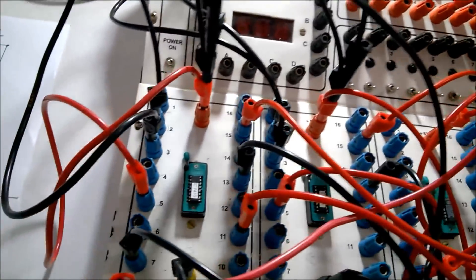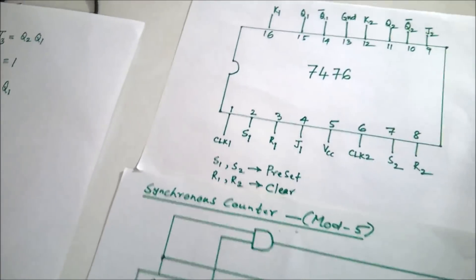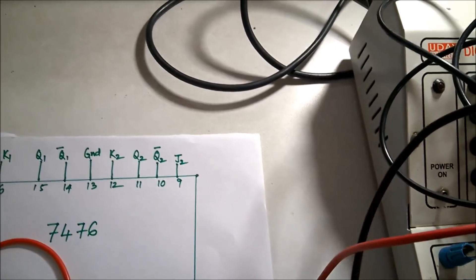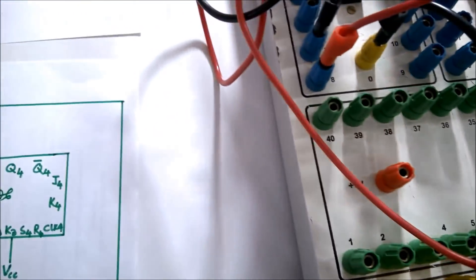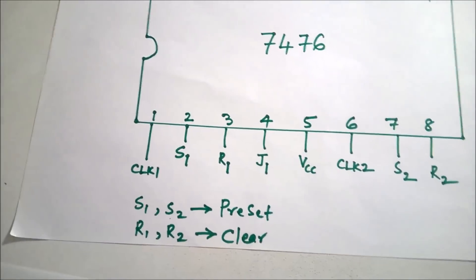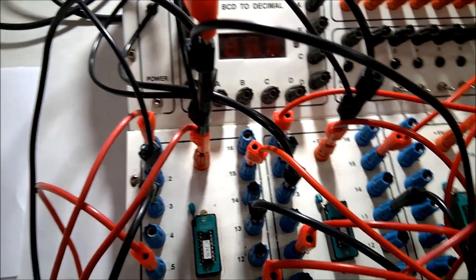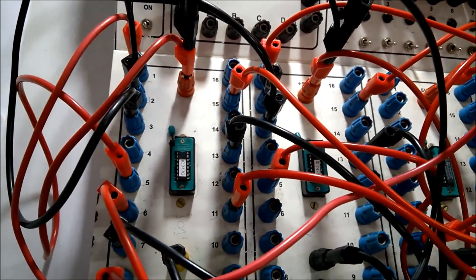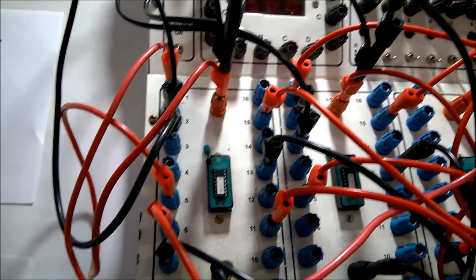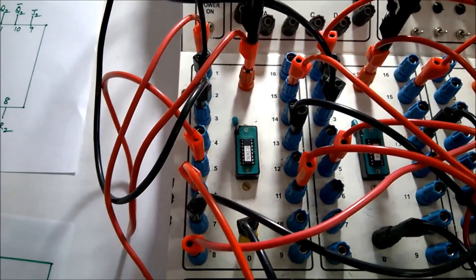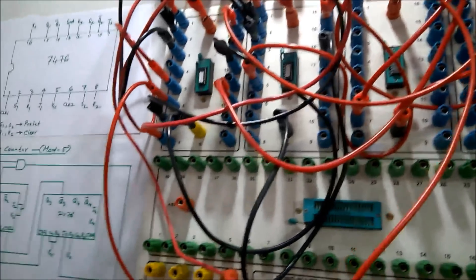Now connecting the clock. Clock pin 1 is the clock input for the first flip-flop in the first IC — connecting it to the clock signal. Pin 6 is also a clock input — connecting to clock. In the second IC, pin 3 is the clock input for the third flip-flop — also connected to the clock. These prerequisite connections must be made before the design-specific connections.